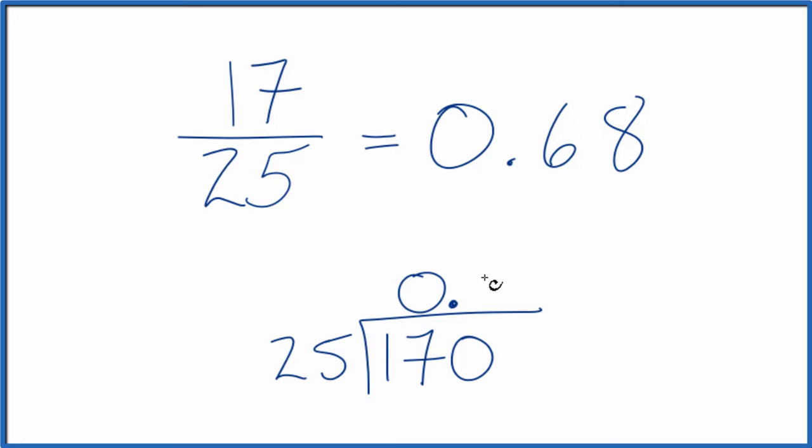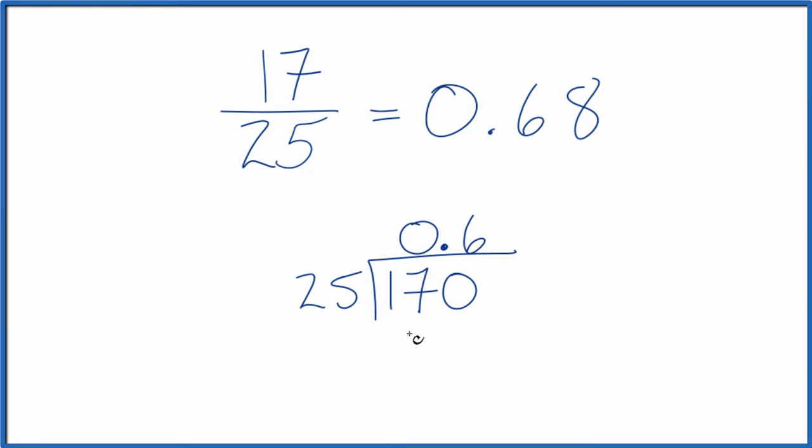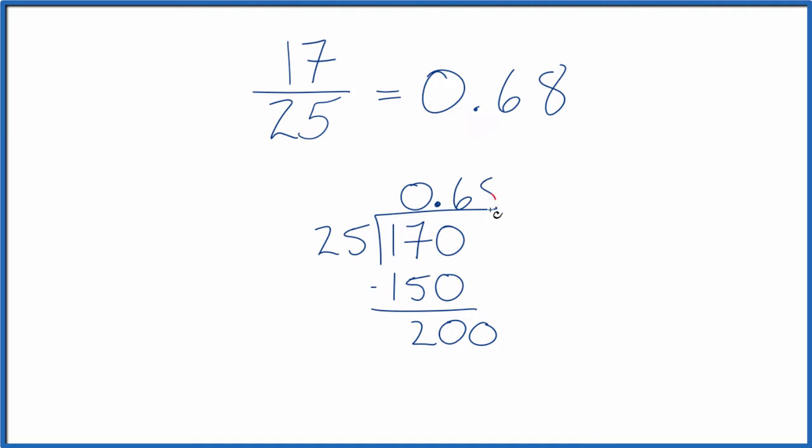6 times 25, that's 150. So I think we're going to go with that because if we take 6 times 25, that gives us 150. We subtract, we get 20. 25 won't go into 20. Let's call it 200 and then move over 1. So 8 times 25, that's 200.